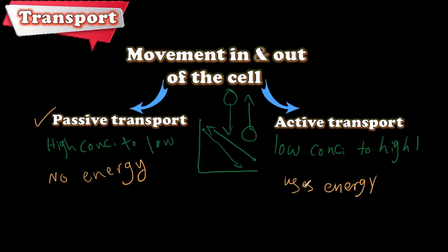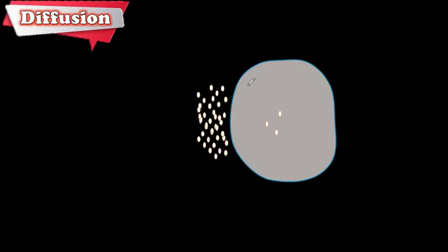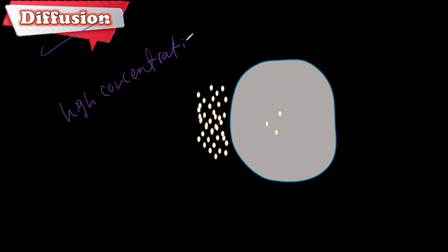Examples of passive transport include diffusion and osmosis, which we will study in detail in the coming slides. Diffusion is the movement of particles from an area of high concentration to an area of low concentration.